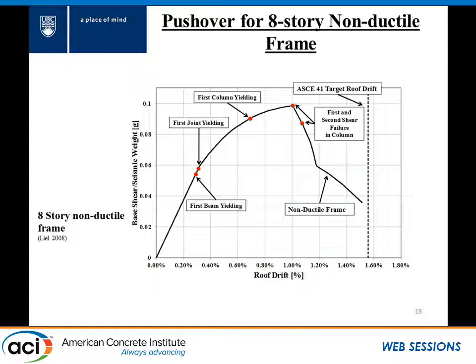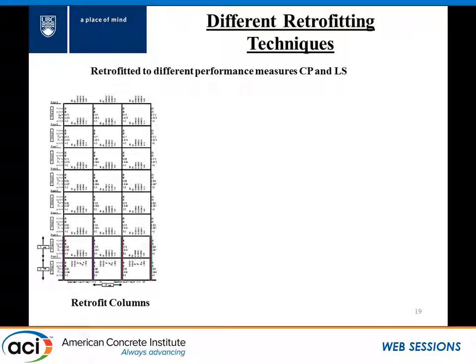We did the standard AC 41 type of assessment: choose a target drift, push the building, and look at demands on components. The sequence of failure in the eight-story building started with yielding in the beams, progressing to the columns until we reached shear failure in the first and second story columns, and finally reaching the collapse state — which was gravity load collapse. We chose three different retrofitting options. The first was to retrofit the columns by adding concrete jackets, retrofitted to two performance measures: collapse prevention (CP), requiring the first two stories, and life safety (LS), requiring the third and fourth stories as well.